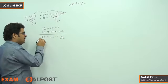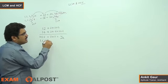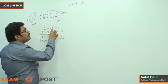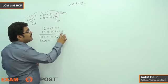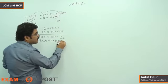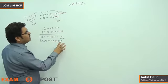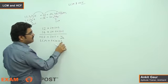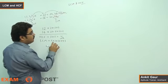Now for LCM — the least common multiple. LCM is a number that is divisible by both 12 and 16. For 12 we have 2 × 2 × 3, and for 16 we have 2 × 2 × 2 × 2. To get the LCM, we take all factors: 2 × 2 × 2 × 2 × 3, which gives us 48. So LCM of 12 and 16 is 48.